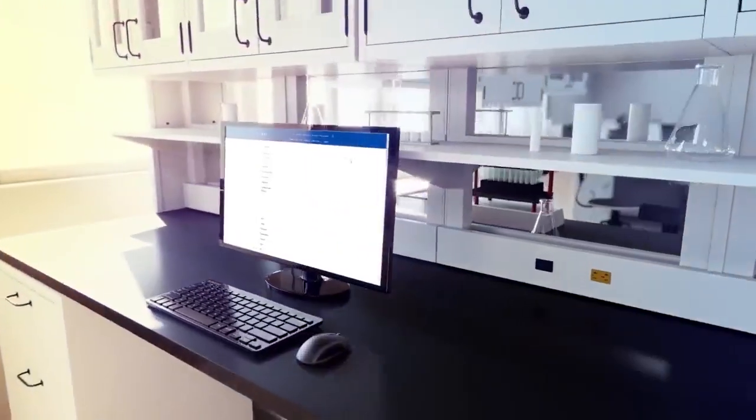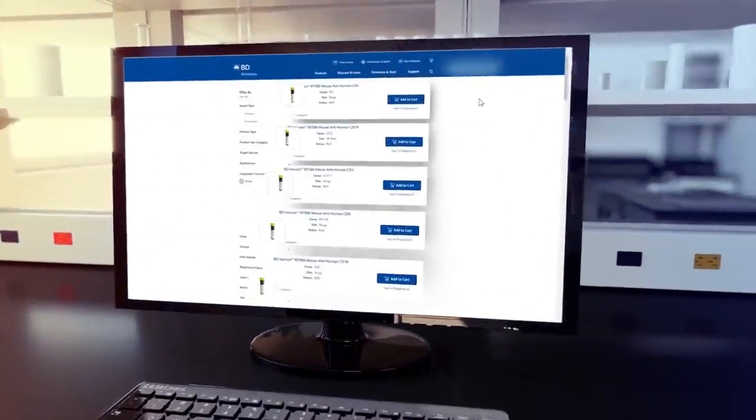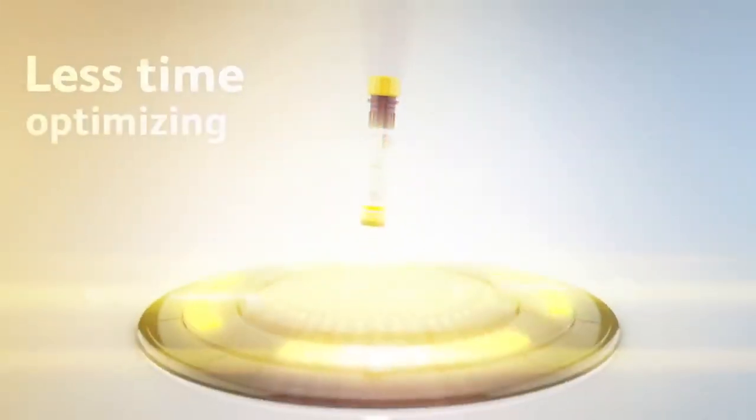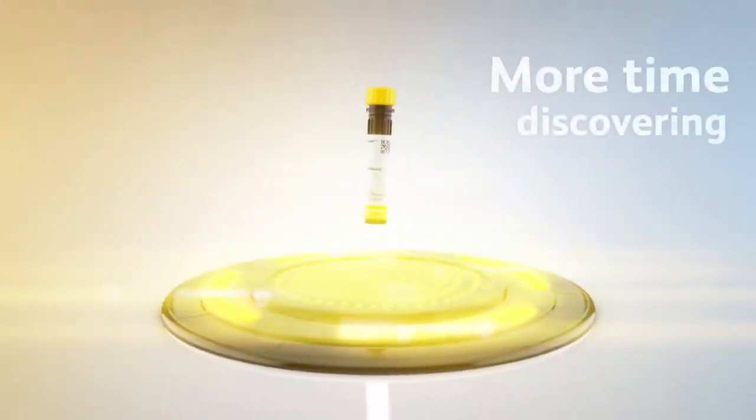BD Horizon Real Yellow 586 reagents come in a variety of antibody specificities to aid various research applications. Spend less time optimizing panels and more time discovering.